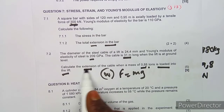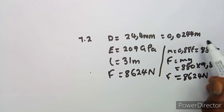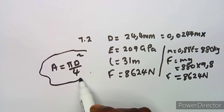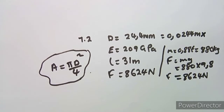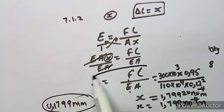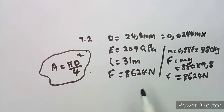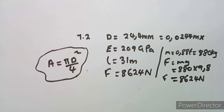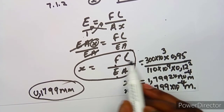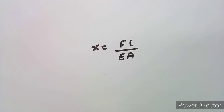Now we calculate the extension of the cable. This is a circular cross-section, so the area is pi·d² over 4. The formula doesn't change: x equals FL over EA. We substitute with A equal to pi·d² over 4, using the same transposed formula we derived earlier.